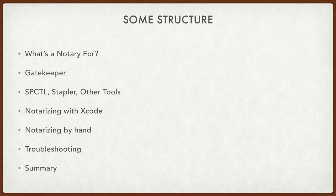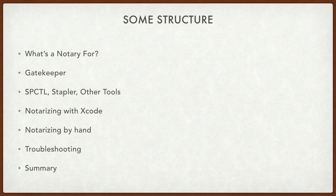We're going to talk about a bunch of things, all of which are related to notarization. I want to talk about what a notary is for, generally speaking. We're going to spend a huge amount of time talking about what Gatekeeper is and what it does. We're going to have to talk about the SPCTL binary, Stapler, and some other tools now in the operating system if you have Xcode and the Xcode command line tools. We're going to talk about notarizing software with Xcode, notarizing by hand after the fact, then some troubleshooting, and we'll finish with a summary. Because the answer with a good talk is that you tell them what you're going to tell them, you tell them the thing, and then you tell them what you told them.